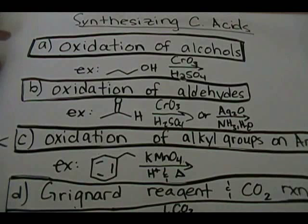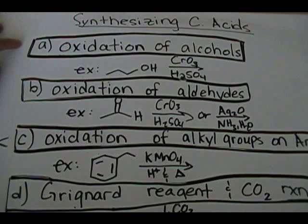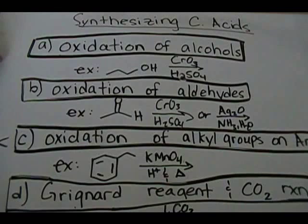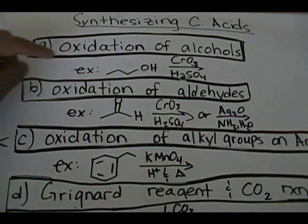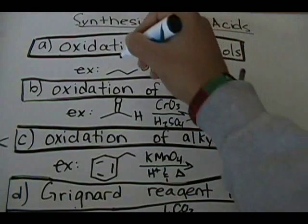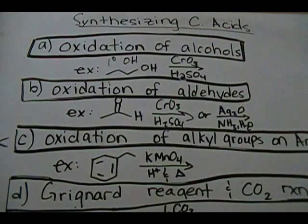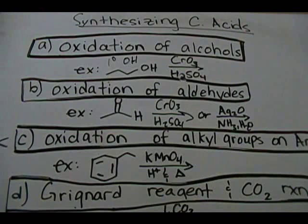The first way we have is oxidation of alcohols. What do I mean by oxidation of alcohols? What type of alcohols am I talking about? Specifically for this reaction, with this specific set of reagents — CrO3 and H2SO4 — you need a primary alcohol. You need a primary OH. If you have a secondary alcohol, this will not work. Instead of forming a carboxylic acid, you'll form a ketone with a secondary alcohol. So primary alcohol is key for this specific set of reagents.